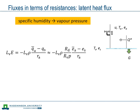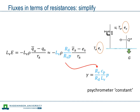We slightly change variables to later obtain an expression close to what is commonly used, though this change is not essential in the derivation. What we do is replace specific humidity by water vapor pressure. This introduces some extra variables: the specific gas constants for dry air and water vapor, as well as pressure. In the resulting expression, two vapor pressures are involved: the vapor pressure in the air and the vapor pressure at the surface. To simplify things, a number of parameters are combined in a single psychrometer constant gamma. Note that this constant is far from being truly constant, as it directly depends on pressure, the latent heat of vaporization depends on temperature, and the specific heat depends on moisture content. With the use of the psychrometer constant, the resistance expression for the latent heat flux simplifies somewhat.